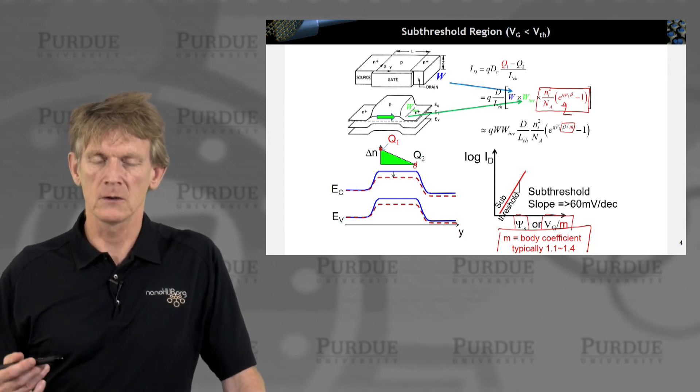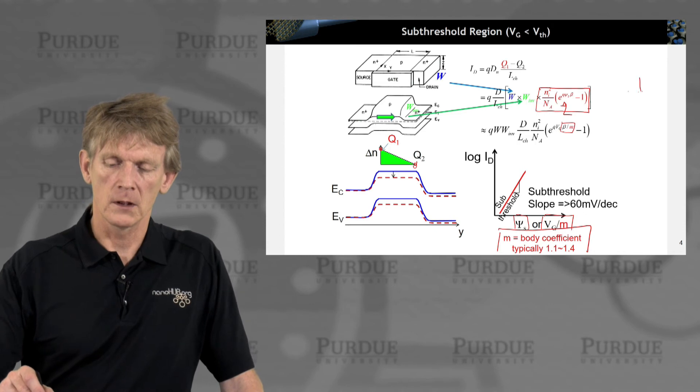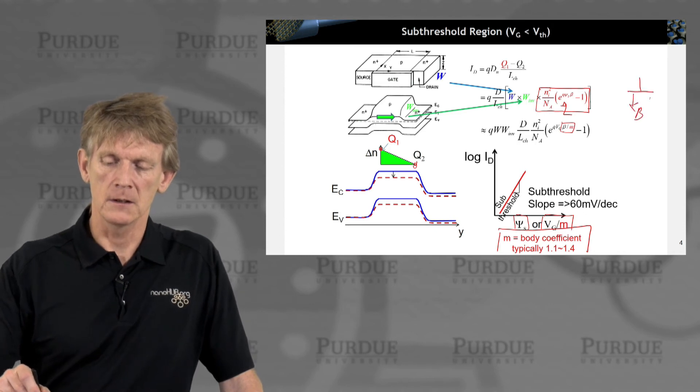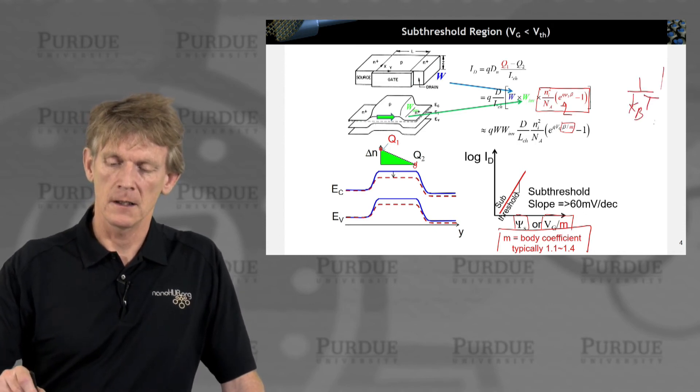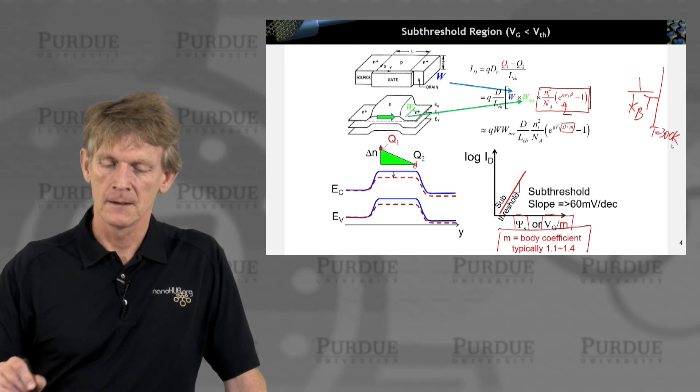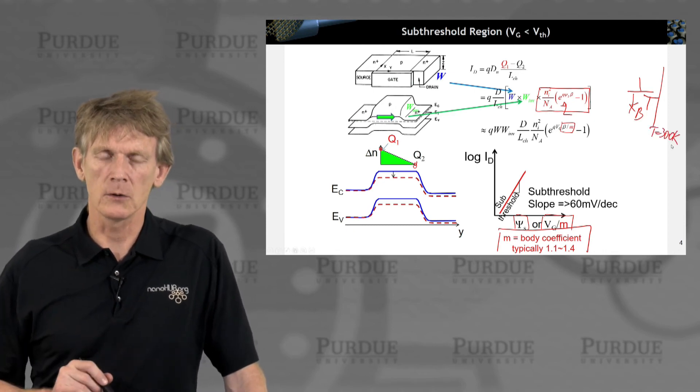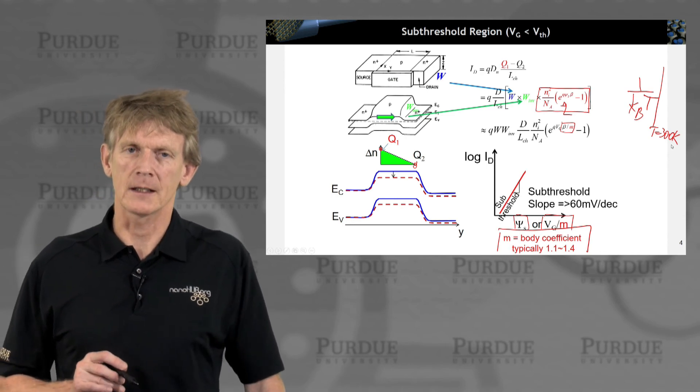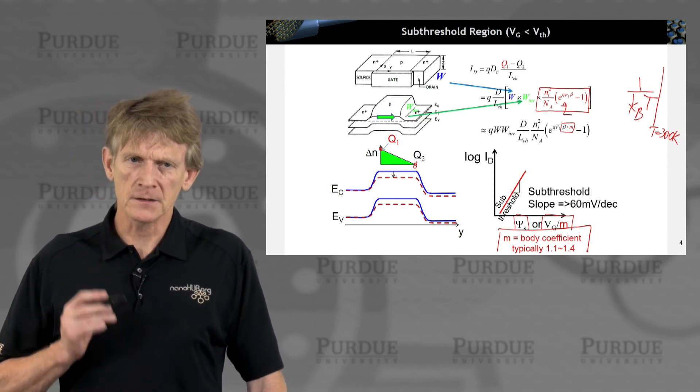And that has purely to do with 1 over kBT at T for 300 Kelvin. You can calculate the slope, and you will find that it's 60 millivolts per decade.